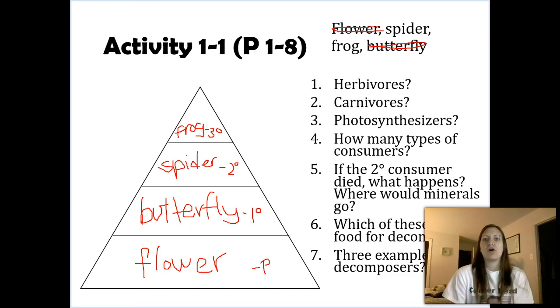The first question asks, how many herbivores are there? Or what are the herbivores? Well, in this case, we only have one herbivore and that's our butterfly. Our butterfly is eating plants. And we know herbivores eat plants. So we have one herbivore and that herbivore is the butterfly. How many carnivores do we have? Now do not mix up carnivores and consumers. Consumers are just something that eats something else. Carnivore specifically is eating other consumers versus eating producers like herbivores. So in this case, we have two carnivores. We have spiders who are eating butterflies. Butterflies are a consumer. We also have frogs. Frogs are eating spiders. So in this case, we have two carnivores.